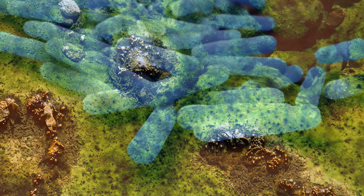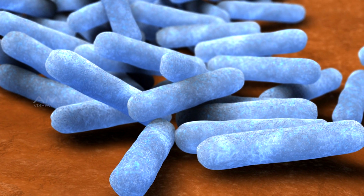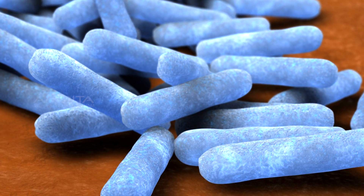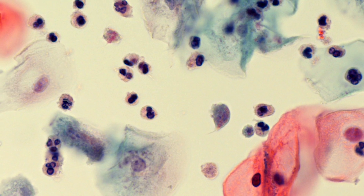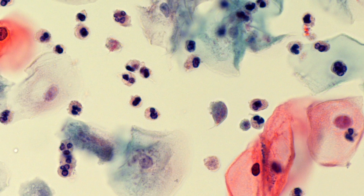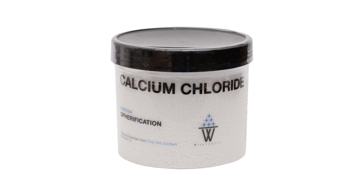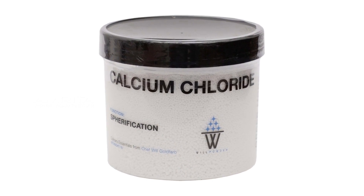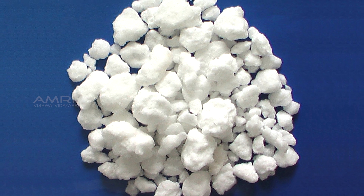If a bacterium is said to be competent, it has to maintain a physiological state in which it can take up the donor DNA. Calcium chlorate treatment is one of the best methods for the preparation of competent cells.